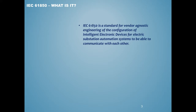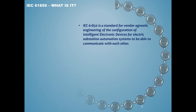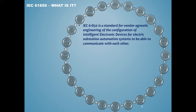So what is IEC 61850? If you look up the definition, essentially it's a standard for vendor-agnostic engineering to configure IEDs in an electric substation for automation systems so they could communicate with each other. It is a standard of multiple parts — thousands of pages. In fact, someone once told me that if you were to read the standard from start to finish at an average human reading speed, it would take around two weeks to read the whole standard.